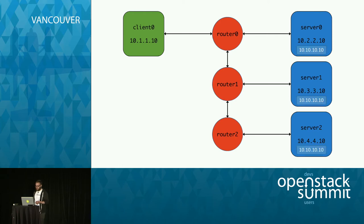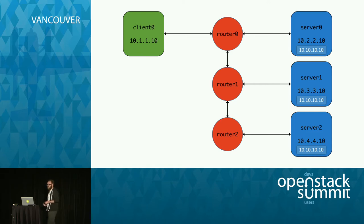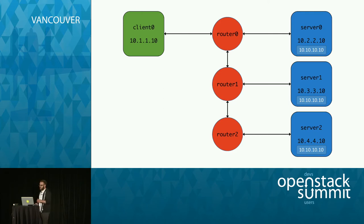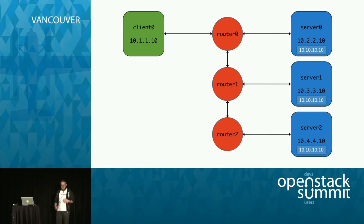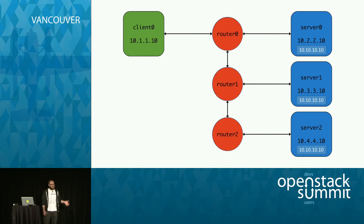The first thing we're going to do is provision our Anycast address on top of our servers using a virtual interface in the form of a loopback interface — not a physical interface, but a virtual one. Through the use of software, these nodes will advertise their address to the routing infrastructure. This advertisement is essentially an assertion that 'I, server zero, can service requests destined for my Anycast IP' — which is 10.10.10.10 in this case. The server talks to the routers, and those routers propagate that information through the rest of the routing topology, building a map of the underlying network.